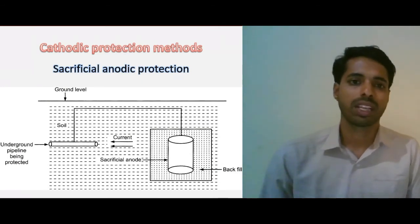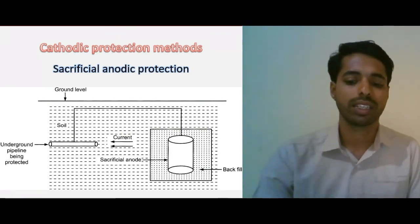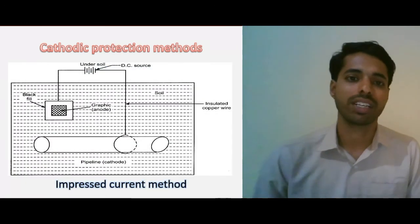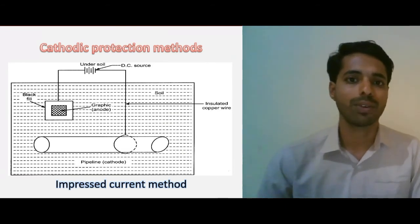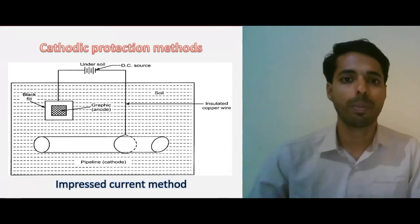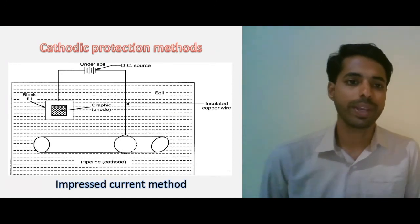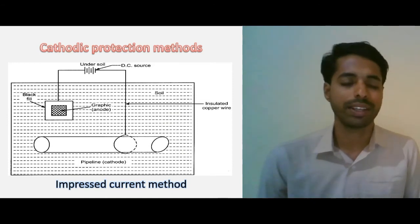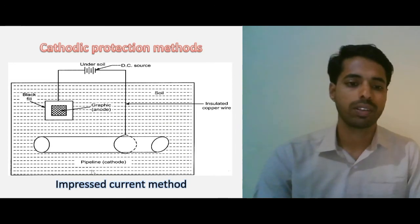Now let's discuss the second method under cathodic protection — the impressed current method. The drawback of the sacrificial anodic protection method is that we need to replace the sacrificial anode once the anodic metal is fully consumed by corrosion. This drawback can be overcome by using the impressed current method, where an impressed current is applied in the opposite direction of the corrosion current to make the whole structure cathodic.